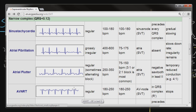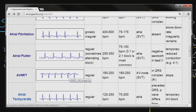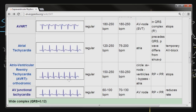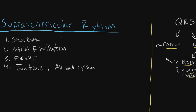Below that you'll see AV nodal reentry tachycardia, atrial tachycardia, and so on. To review: when you suspect an SVT, first make sure there's no P-wave, then look at your QRS. If it's narrow or wide with a bundle branch block, make sure you're not looking at a sinus rhythm, look for signs of atrial fibrillation, look for paroxysmal SVT — which is SVT that will come and go in between sinus rhythms — and a junctional or AV nodal rhythm.